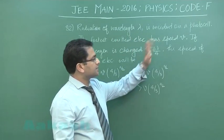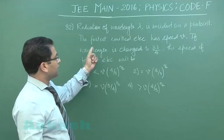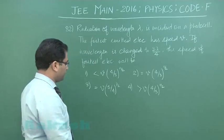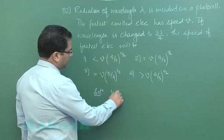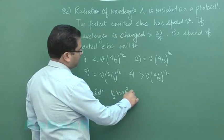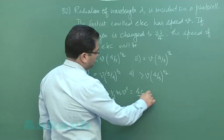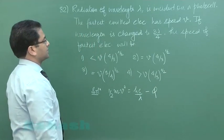Radiation of this wavelength is incident on a photocell. The fastest emitted electron has speed v. So in the first case you would get one half m v square would be hc by lambda minus phi where phi is the work function.